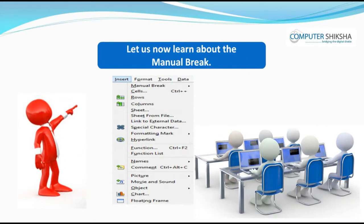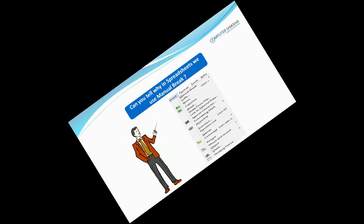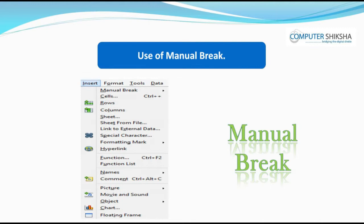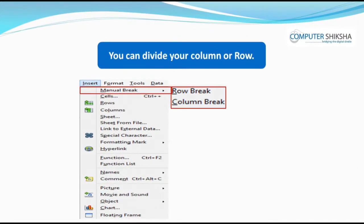Let us now learn about manual break. Can you tell why we use manual break in spreadsheets? By using manual break in a spreadsheet, you can divide your column or row. Whenever you break a column or row, you will not be able to print that part. If you want to remove the manual break, you need to go to the Edit menu and use the Delete Manual Break option.